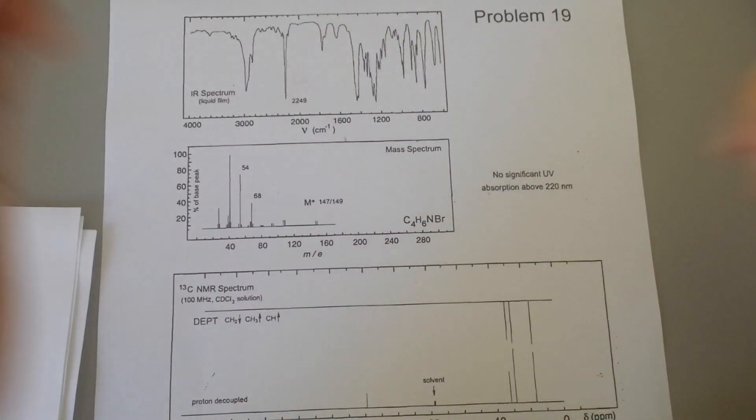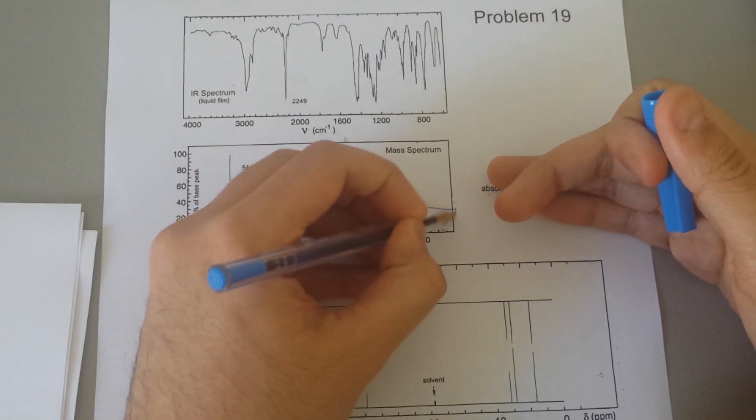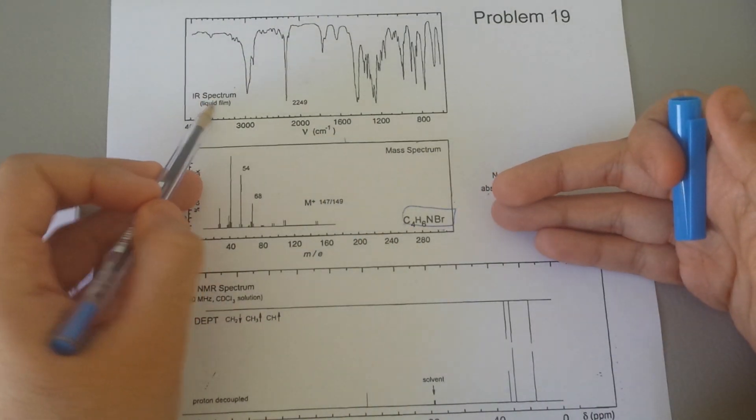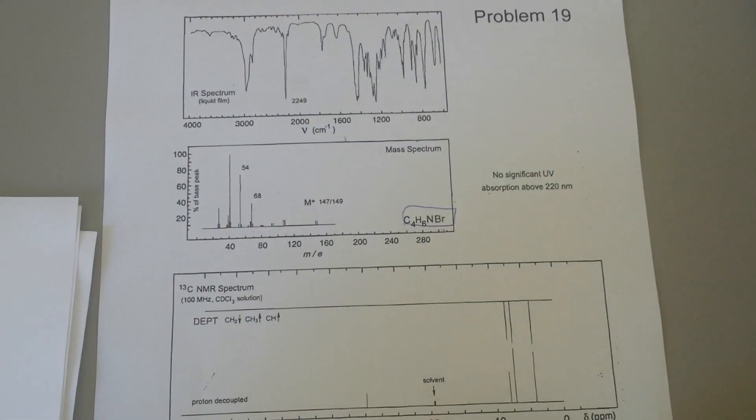So today I'm going to show you, given a chemical formula, how we can identify a structure based upon numerous tests such as IR spectrum or mass spectroscopy, CNMR, HNMR. I have done two other previous examples before so make sure you check them out too.